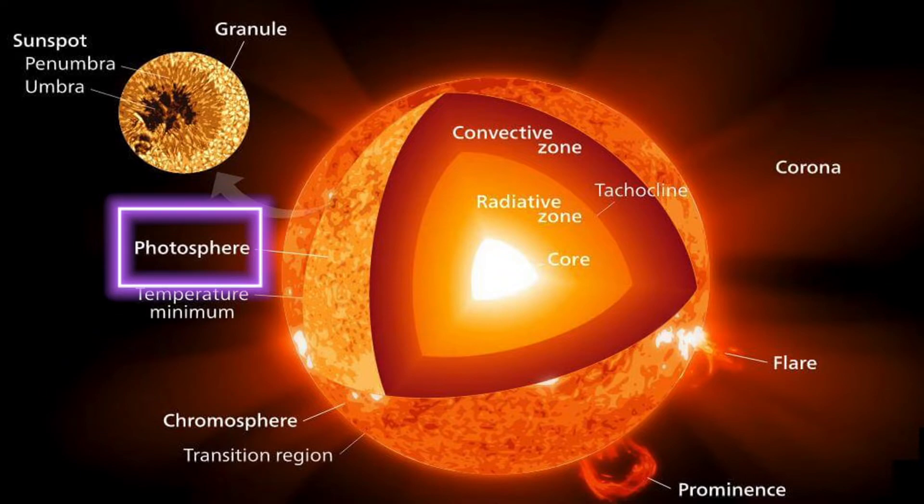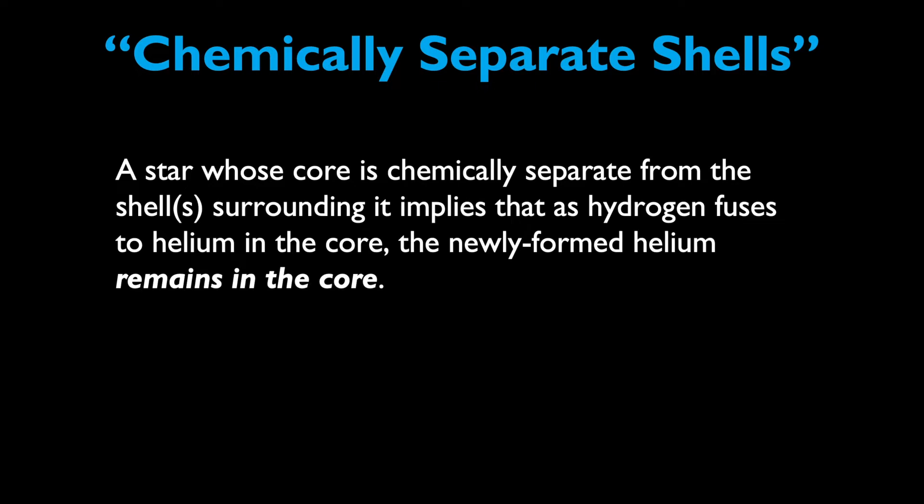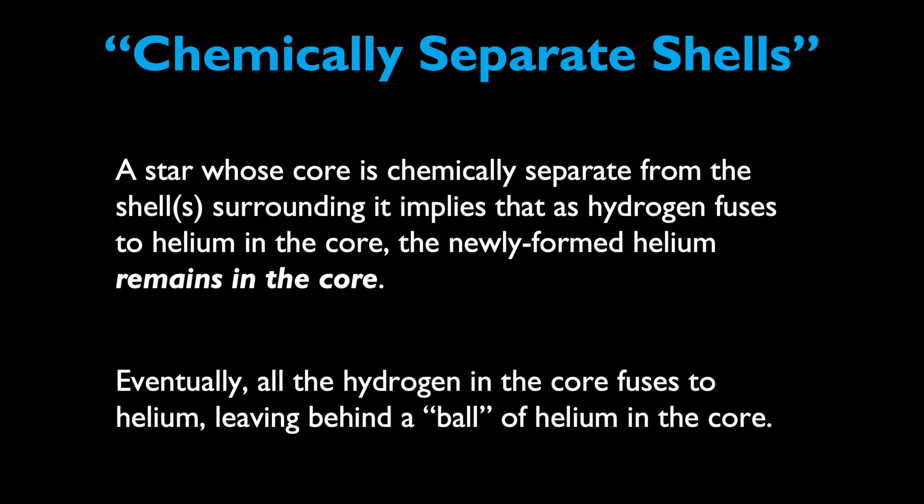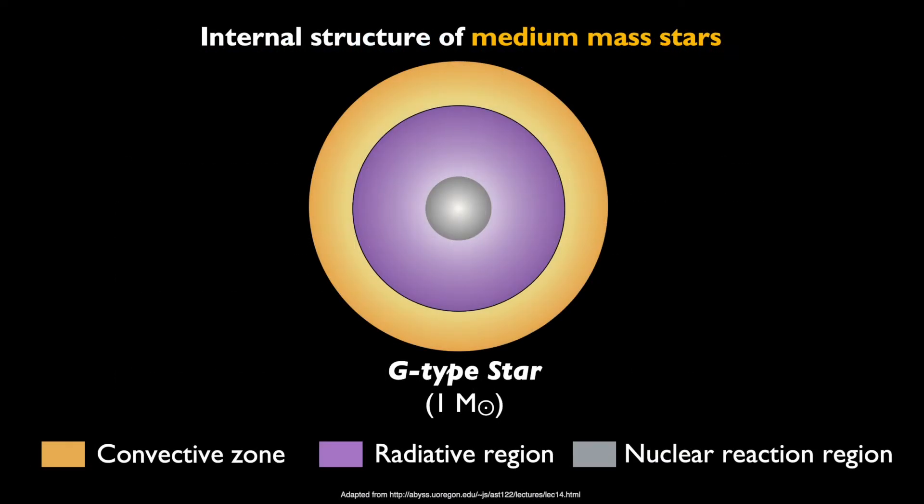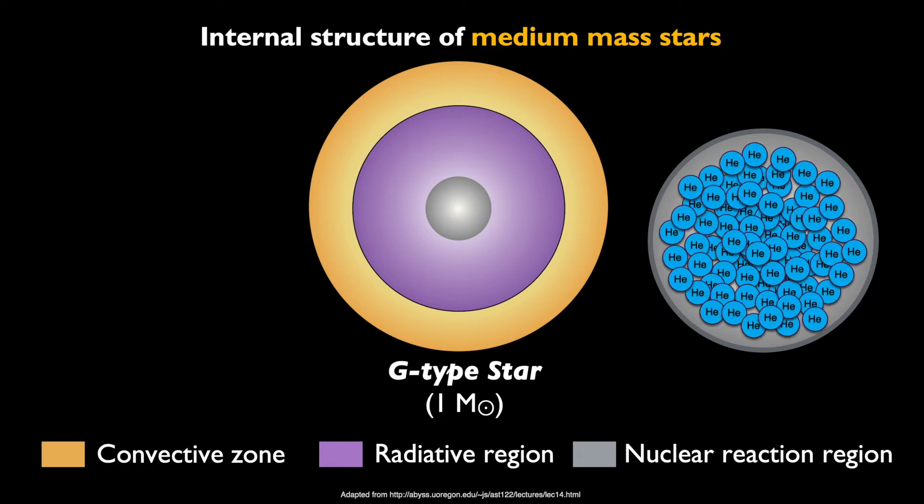A star whose core is chemically separate from the shells surrounding it implies that as hydrogen fuses into helium in the core, the newly formed helium remains in the core and has nowhere to go. Eventually, all of the hydrogen in the core fuses into helium, leaving behind a ball of helium in the core. Here we can see an animation of this concept. By zooming in on the core, we can see groups of four hydrogen nuclei fusing into helium atoms, eventually filling up the core with the newly produced helium.